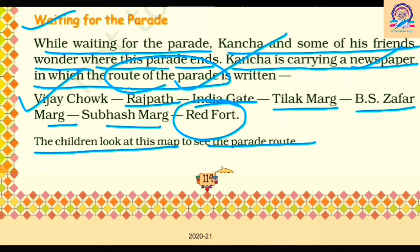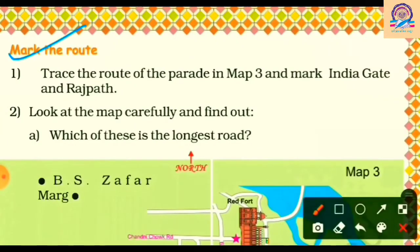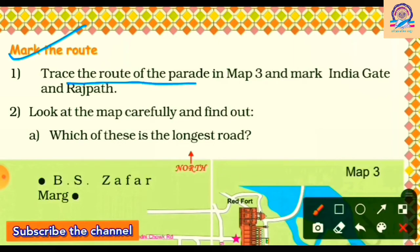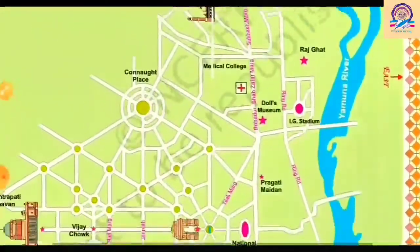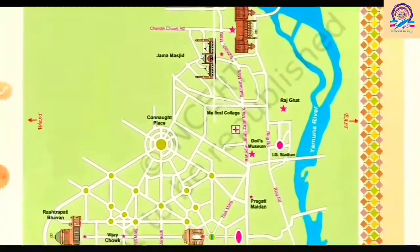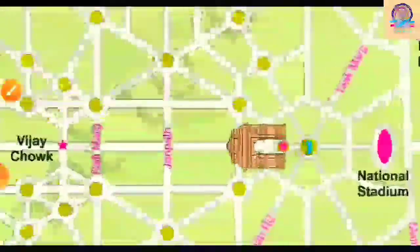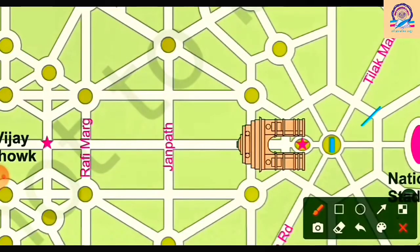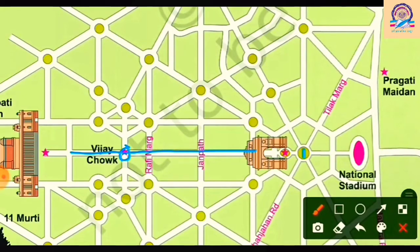The children look at the map to see the route of the parade. Now we have to mark two things: first, trace the route of the parade on map three and mark India Gate and Rajpath. Second, find out which of the roads is the longest. The parade starts at Vijay Chowk, shown by the star mark at the bottom of the map. The road between India Gate and Rashtrapati Bhavan is Rajpath road, which we already saw in map one.